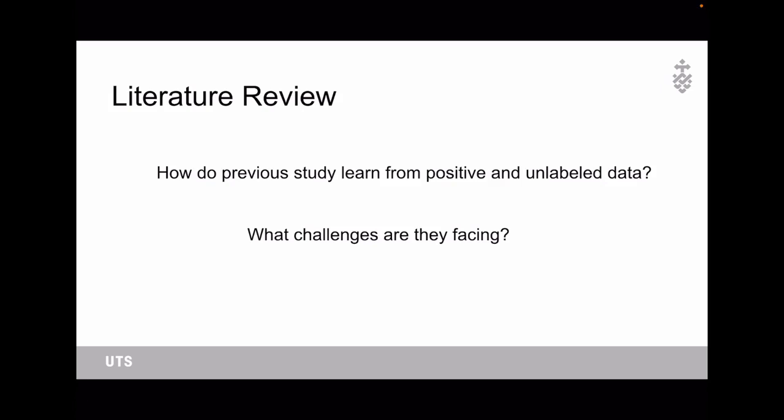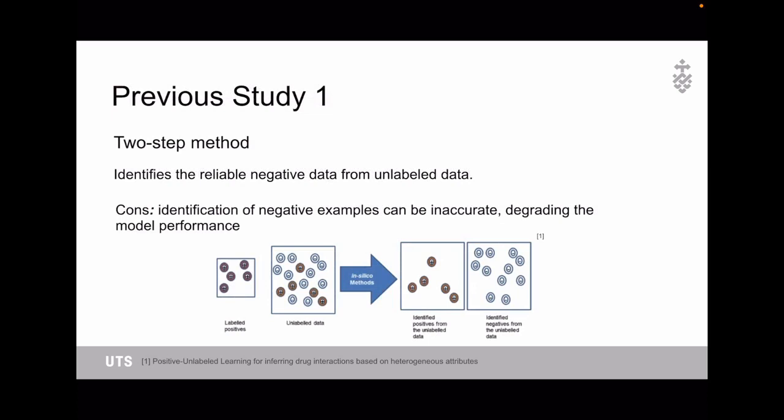The second part is the literature review. In this part, we will get to know how previous studies learn from positive and unlabeled data, and what challenges they are facing. The first line of method is called the two-step method. First, it identifies the reliable negative data from the unlabeled data, and then it utilizes both identified negative data and labeled positive samples to train the classifier. But the cons of this method is that the identification of negative samples can be inaccurate sometimes, which will degrade the model performance.